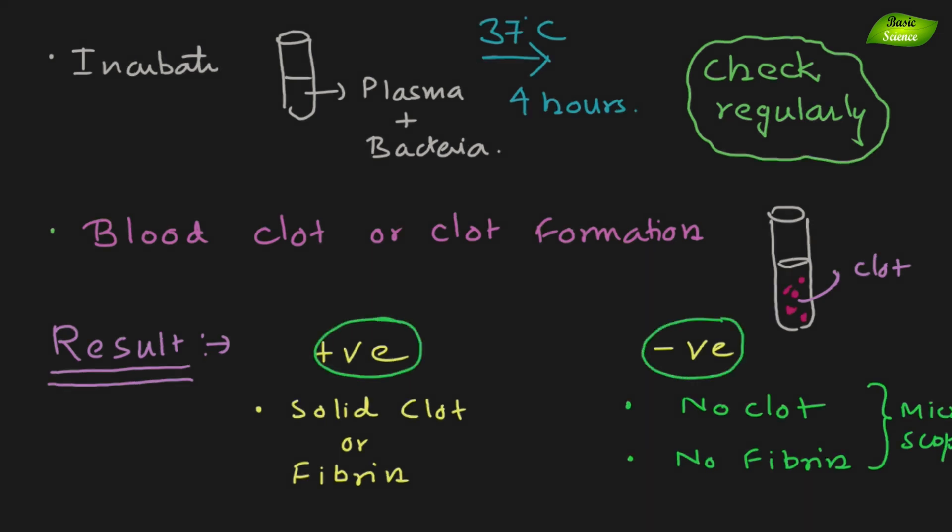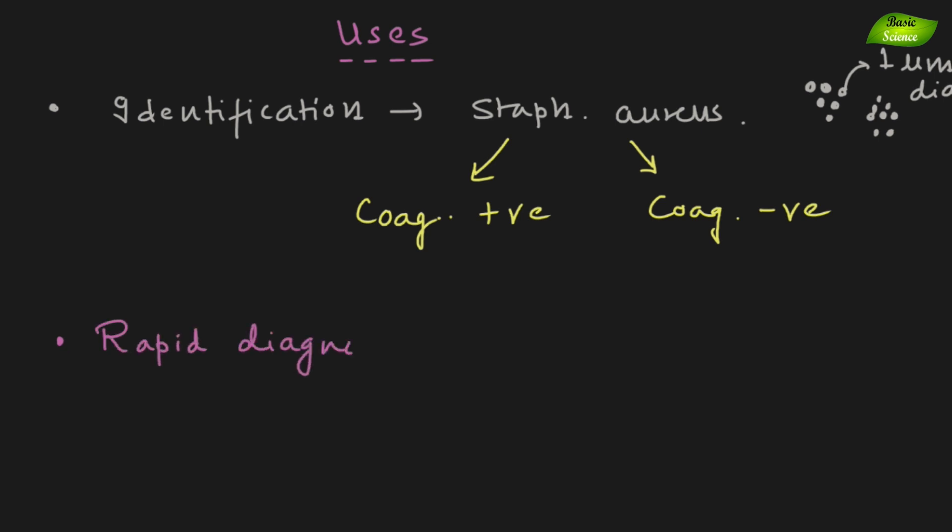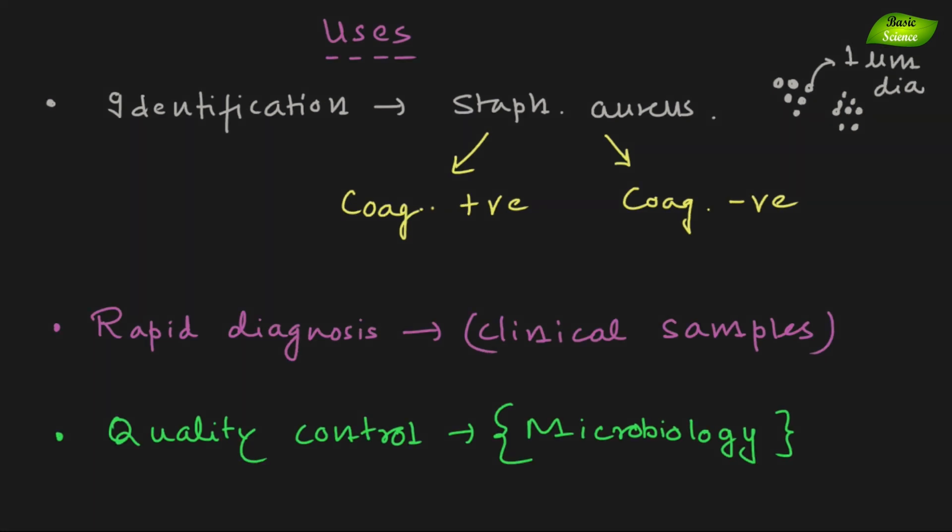Next comes the uses, what are the uses of this particular test. It is used for the identification of Staphylococcus aureus organism. In staph you have coagulase positive organisms, means Staphylococcus can have coagulase positive and it can also have coagulase negative organisms. Staphylococcus aureus is coagulase positive and this test can be used for rapid diagnosis of clinical samples for Staphylococcus aureus. It can also be used as a quality control test in the microbiology lab if you want to check for Staphylococcus aureus contamination. You can rapidly screen the colonies by using this test and if you have positive results that means there is Staphylococcus aureus contamination. Many other uses are also there in research and teaching, all these biochemical tests are being frequently used.